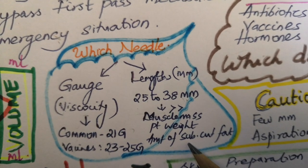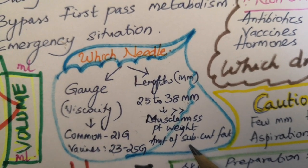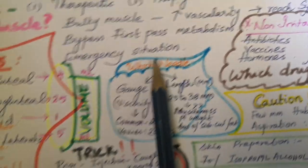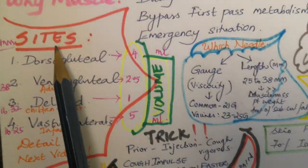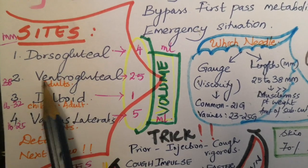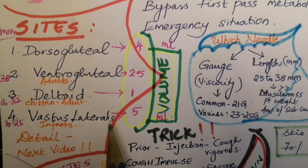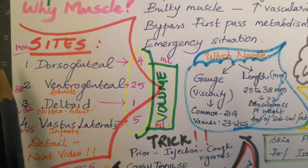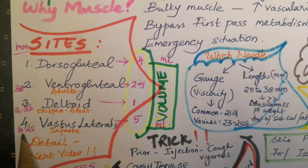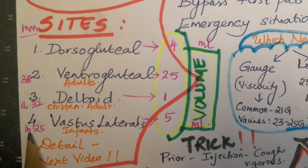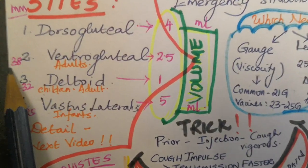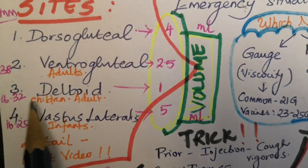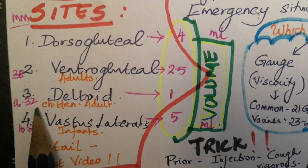Needle length varies from 25 to 38 mm based on muscle mass, patient weight, and subcutaneous fat. The most commonly used intramuscular sites are dorsogluteal, ventrogluteal, deltoid, and vastus lateralis. Specific needle lengths per site: 38 mm for ventrogluteal, 16 to 32 mm for deltoid.